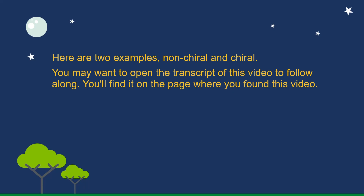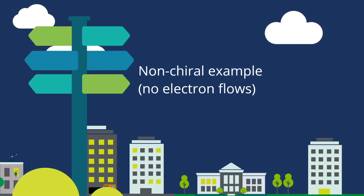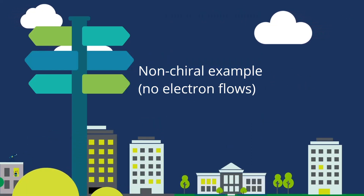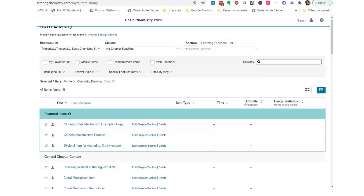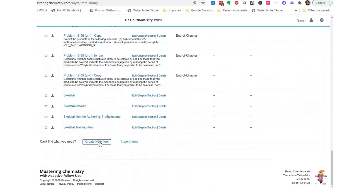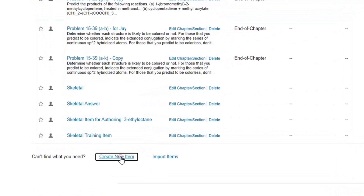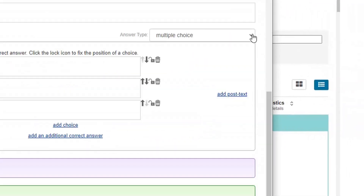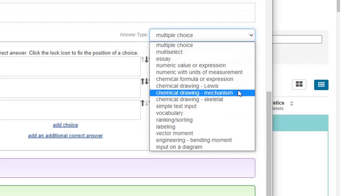Here are two examples: nonchiral and chiral. You may want to open the transcript of this video to follow along — you'll find it on the page where you found this video. Nonchiral example: no electron flows. In the item library in Mastering Chemistry, select Create New Item. Change the answer type to Chemical Drawing Mechanism.